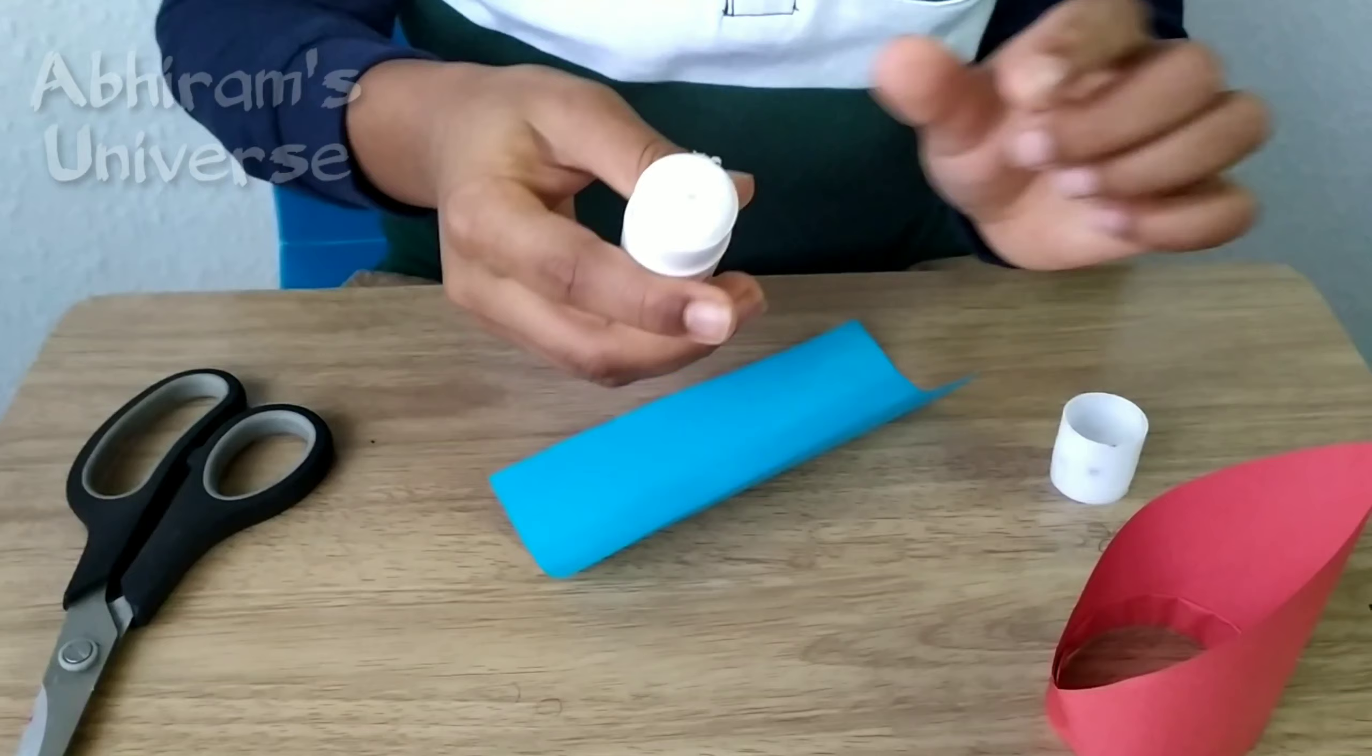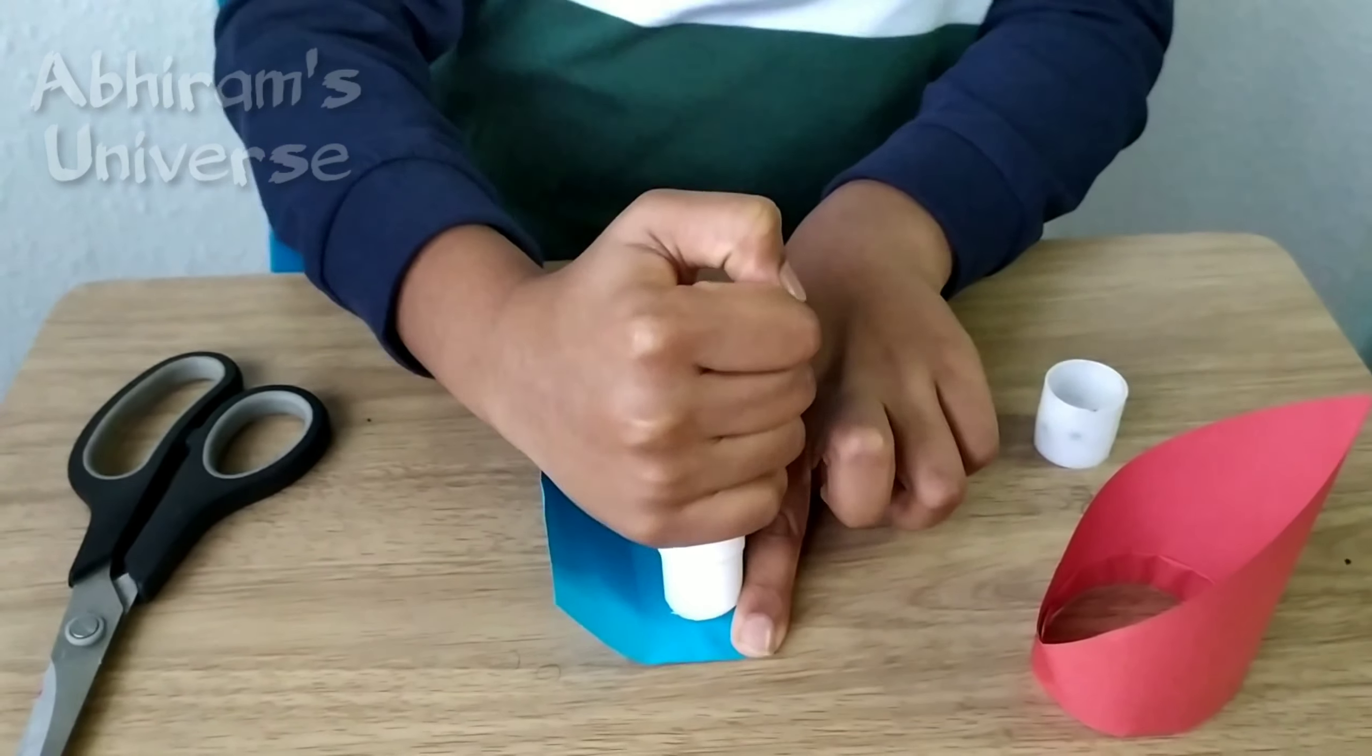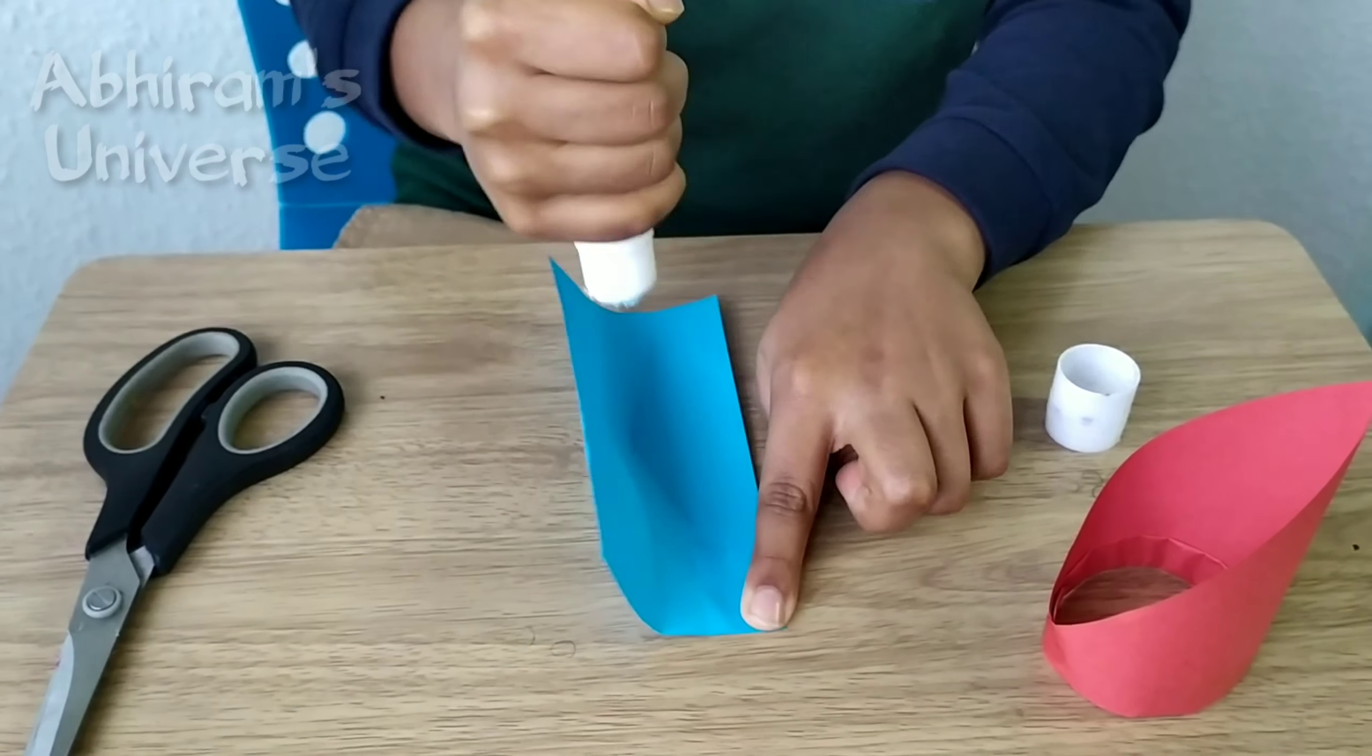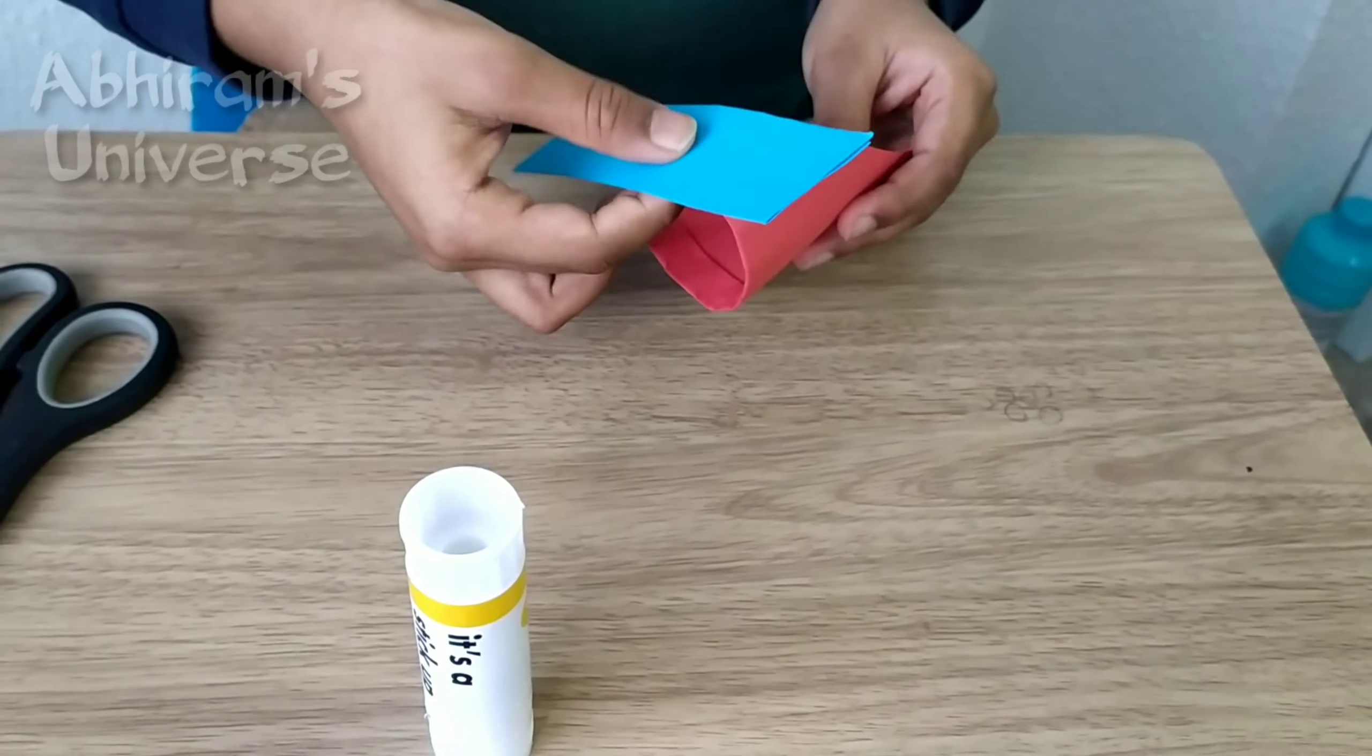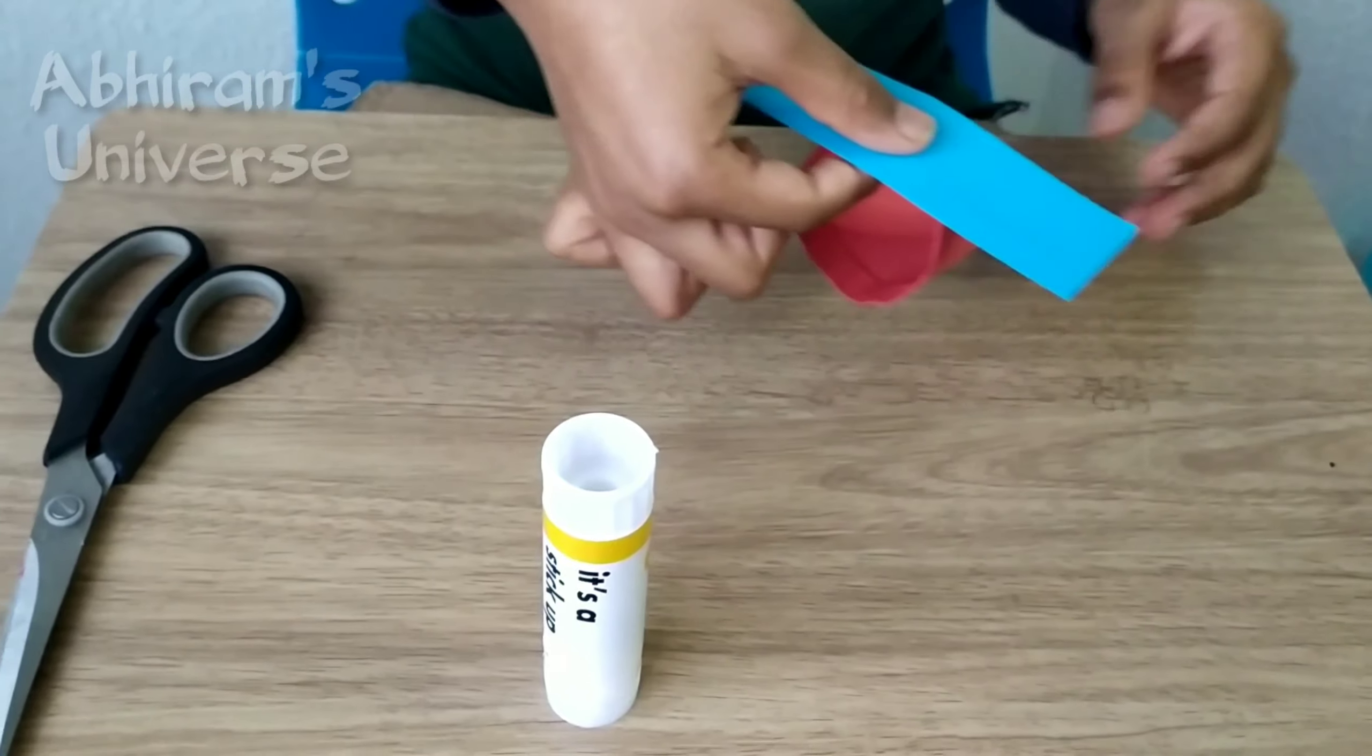So now you will need to take the glue and then now you will need to put some glue here. First piece you have to do is put it like that then it could fly.